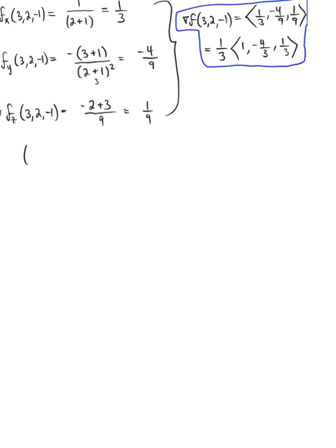Part B is asking us to find a unit vector pointing in the direction of maximum increase. A vector V pointing in the direction of steepest ascent or maximum increase is the gradient at that given point divided by the magnitude of our gradient — that rate of maximum increase, which is the solution to Part C. So we already have the gradient; all we need to do is find the magnitude.